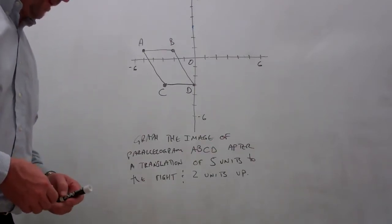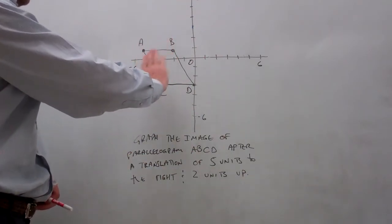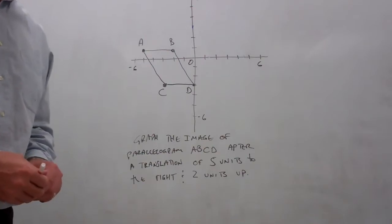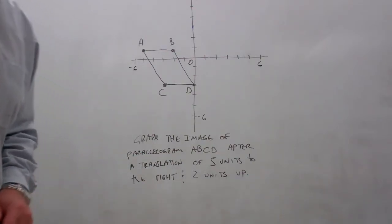That's actually pretty easy to do. When we talk about moving this entire image, this parallelogram, five units to the right and two units up, the easiest way is to take each one of the vertices, each one of the points,